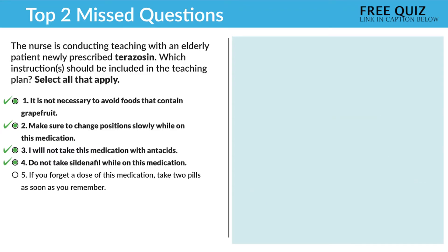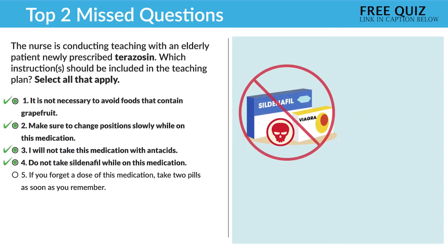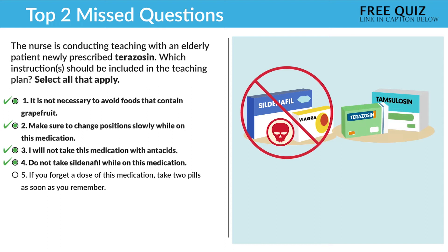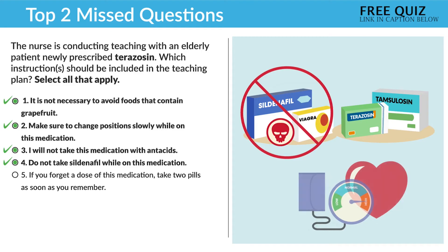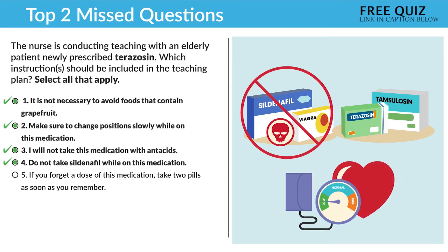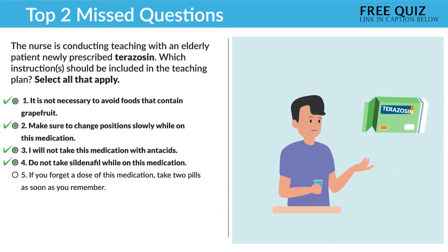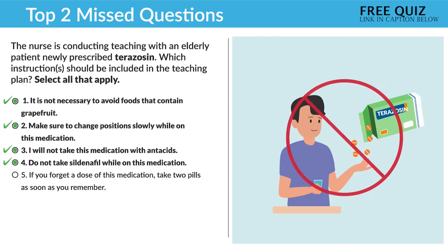Option four is also correct: Do not take sildenafil while on this medication. Don't take sildenafil, since both drugs can lower blood pressure too low. Option five: If you forget to take a dose, take two pills as soon as you remember. No — this is always an NCLEX trick. We never double up on meds if a dose is missed.